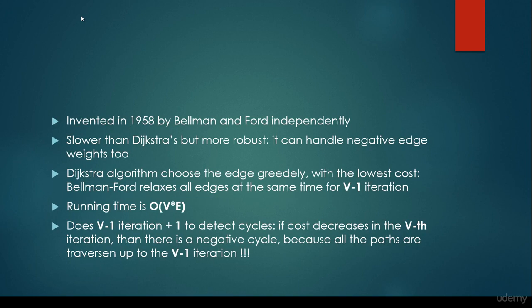This algorithm was invented in 1958 by Bellman and Ford independently. Basically, it is slower than Dijkstra's shortest path algorithm. But it's very important that on the other hand it's much more robust because it can handle negative edge weights as well.